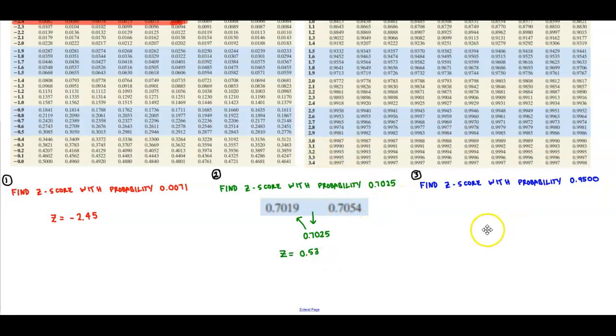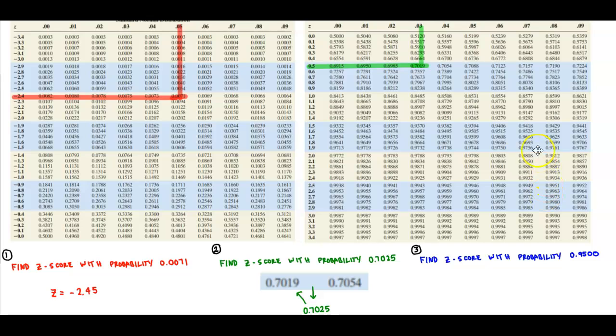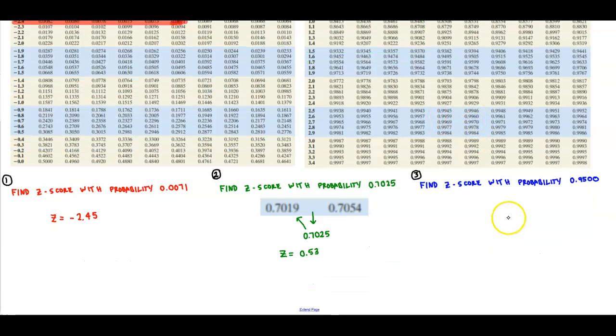Okay, now the last scenario that we would want to find is find the z-score with a probability of 0.9500. So if we come up here, we want to look for 0.9500. Well, if you notice here, it's not in there exactly, but we can see that it's in between 0.9495 and 0.9505. So it's in between those two numbers.